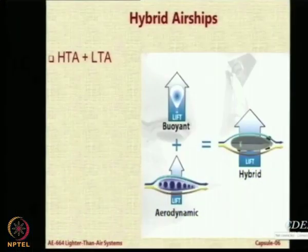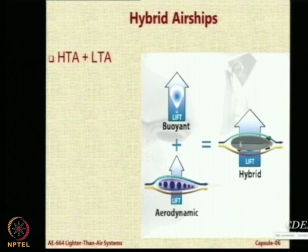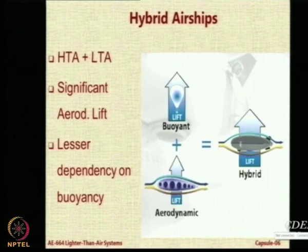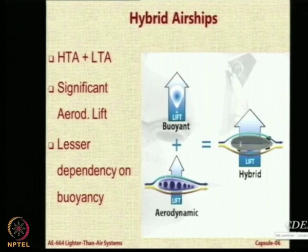When you have a system in which the buoyant lift is not the main or only source of lift, and a substantial amount of dynamic lift is also generated, then that system is a combination of HTA and LTA. The main motivation is reducing the size of the flying vehicle, because if you depend on buoyancy alone, volume is the single major component that affects capability — if you want more lift you have to make it large, and then there are many problems with large-scale systems.